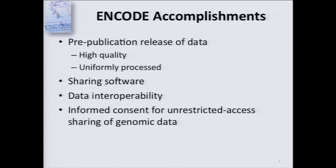ENCODE has released thousands of datasets, released pre-publication by the consortium. They are high-quality data containing replicates, and the consortium data are uniformly processed. We share software through the ENCODE portal and through standard resources such as GitHub. We're working with partners at other projects — including Common Fund Roadmap Epigenomics and the International Human Epigenome Consortium — to increase data interoperability by standardizing ontologies, metadata, and data standards. We've also developed an informed consent to allow unrestricted access and sharing of genomic data from participants.